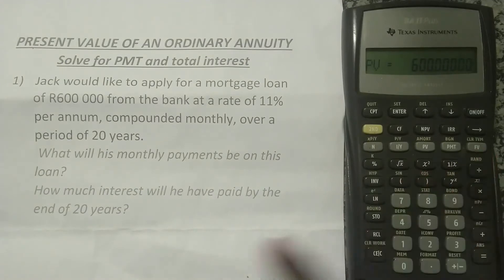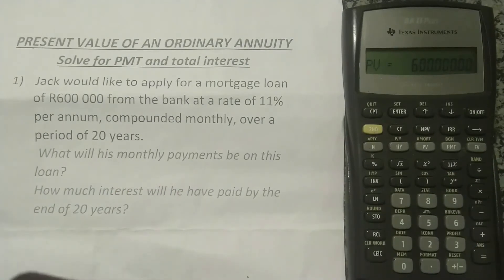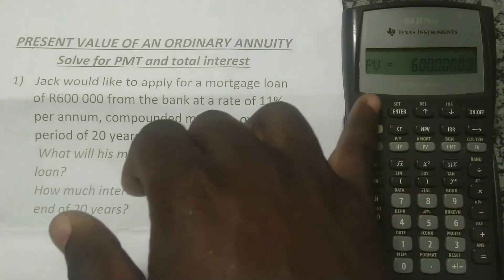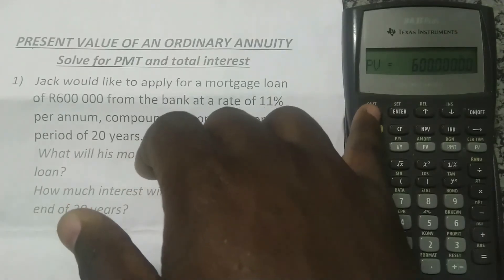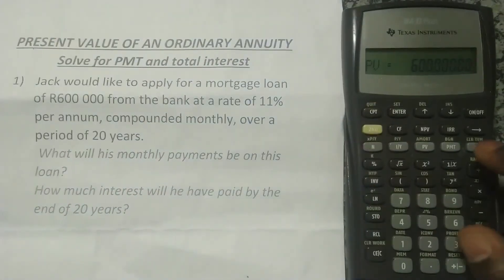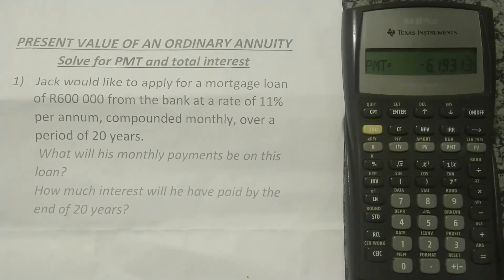Now I want PMT because we're asked what his monthly payments will be on this loan. I press Compute (CPT) — the top-left button — then PMT. The calculator gives us the monthly payment: R6,193.13. That answers the first question.